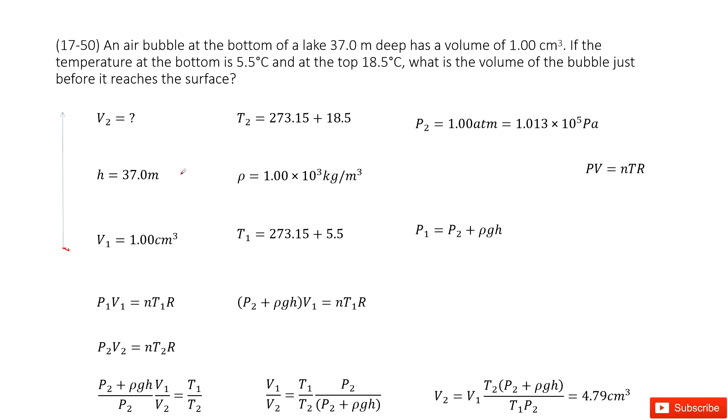This air bubble moves up to the surface of the lake. The distance it moved is 31 meters. We know the volume will expand, but we don't know this - it's the quantity we need to find. At the surface of the lake, the temperature increased to 18.5 degrees Celsius. We convert the unit to Kelvin.